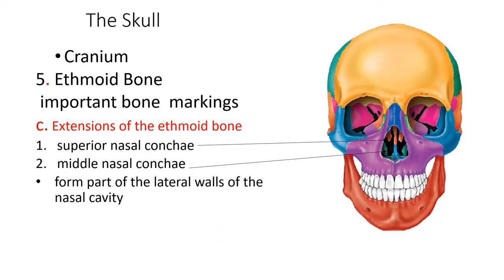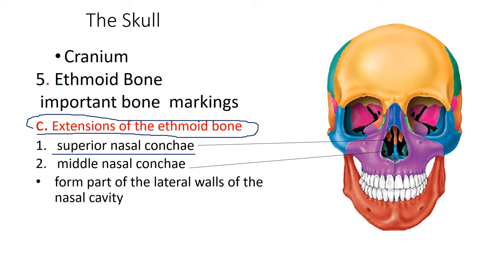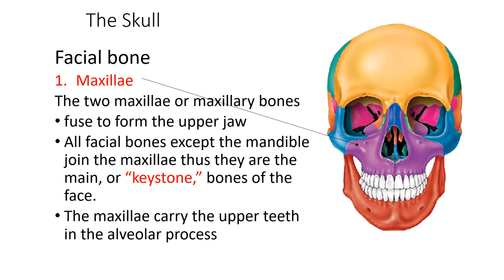There are also extensions of the ethmoid bone — the superior nasal conchae and middle nasal conchae. The middle nasal concha and the superior nasal concha form part of the lateral walls of the nasal cavity. There are lateral walls of the nasal cavity that contain these conchae.